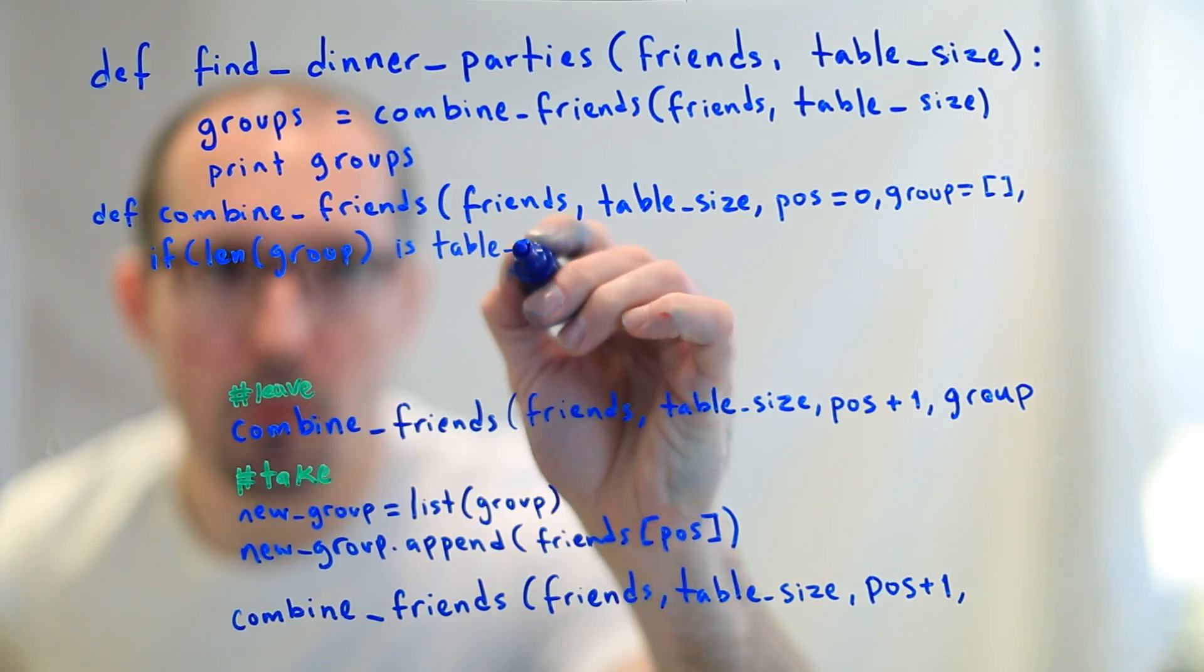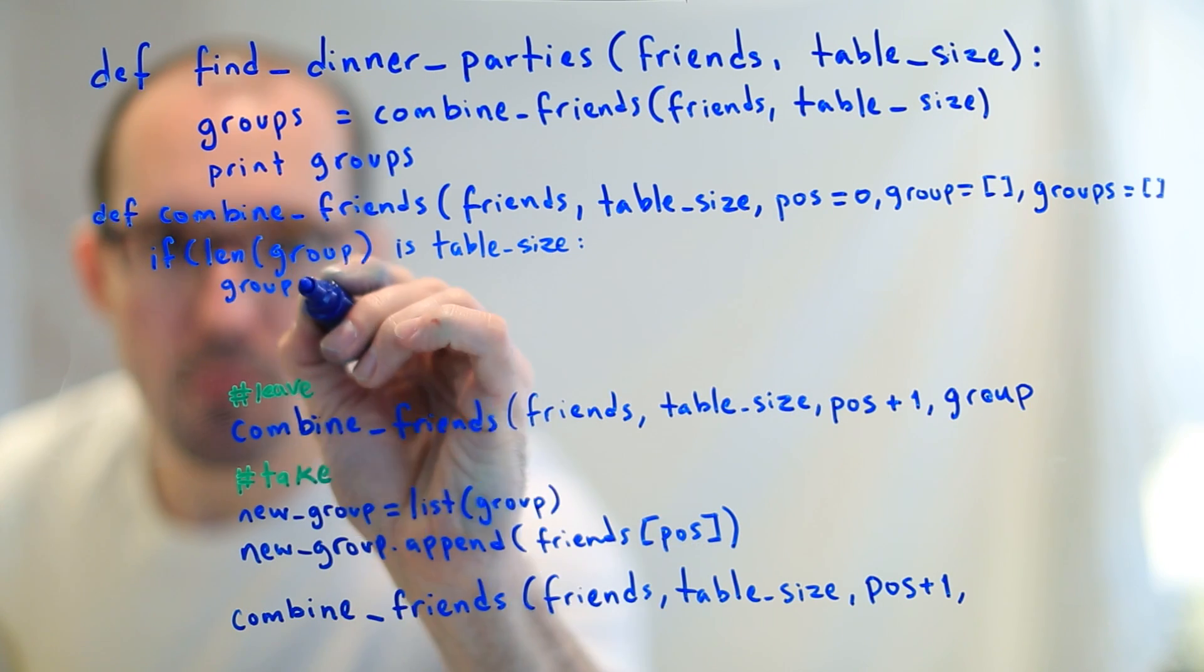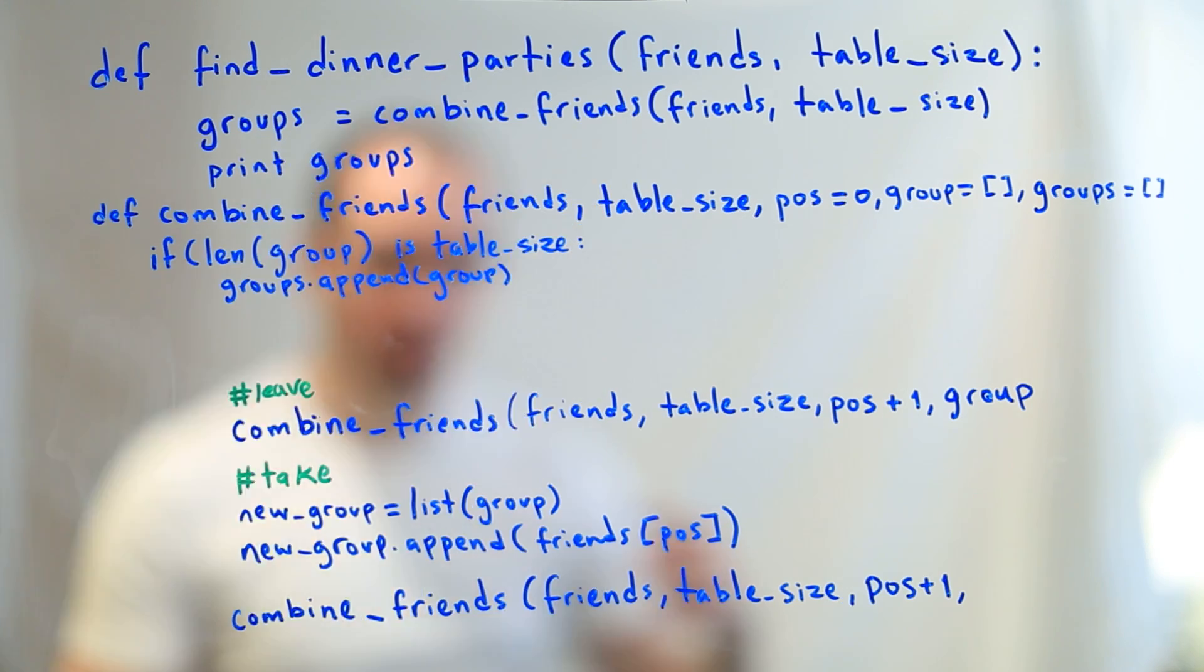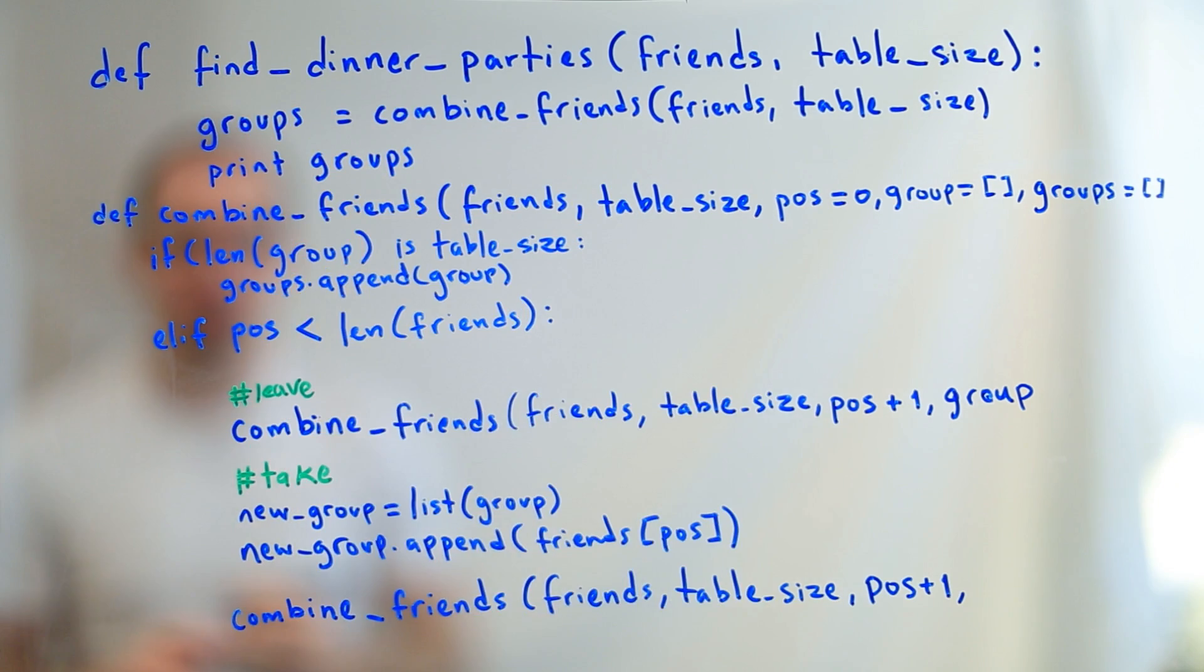One of them is when our current group is of the size of our table. As soon as we have, you know, let's say table size is four. As soon as we have four people in our group, we're done. We don't need to go any further. So right there, we can break. We also know there are going to be recursive cases here that don't actually result in groups large enough to fill the table.